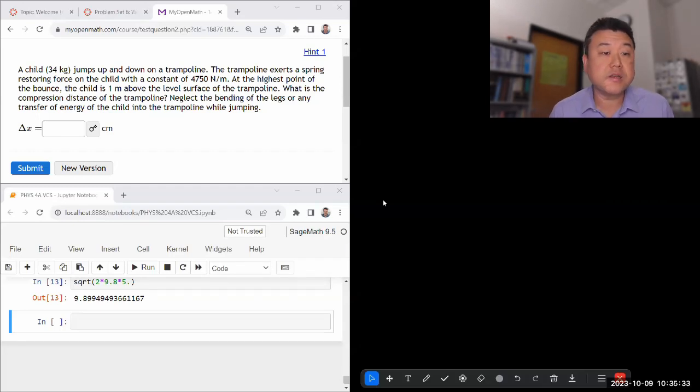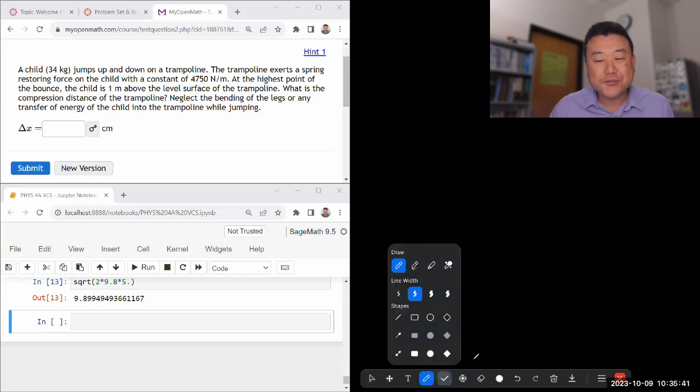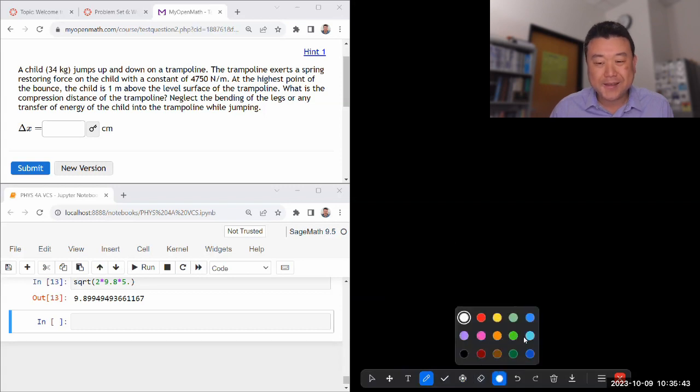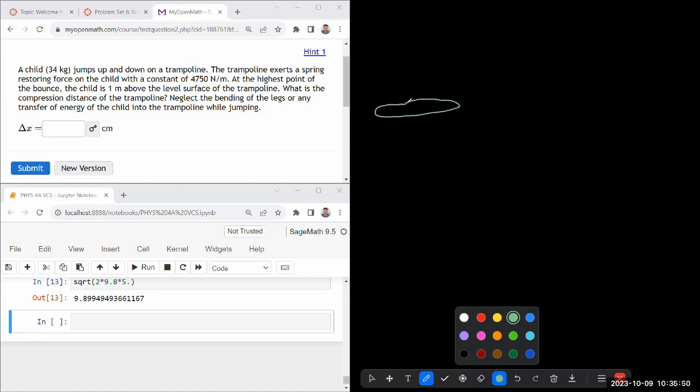Looking at this question, it says a child is jumping up and down on a trampoline. Let me just start doodling a bit so that I make sure that I don't forget any information. So I have a trampoline here and I have a blue child who's jumping up and down.